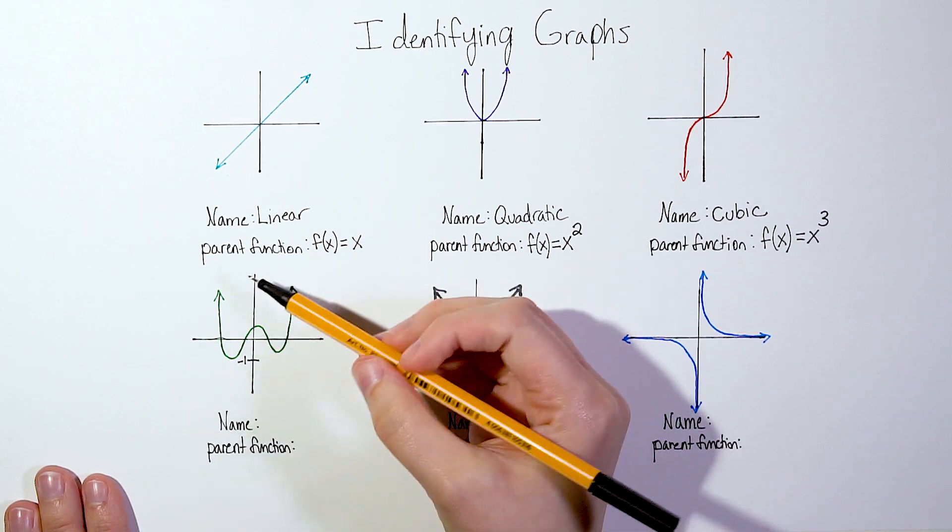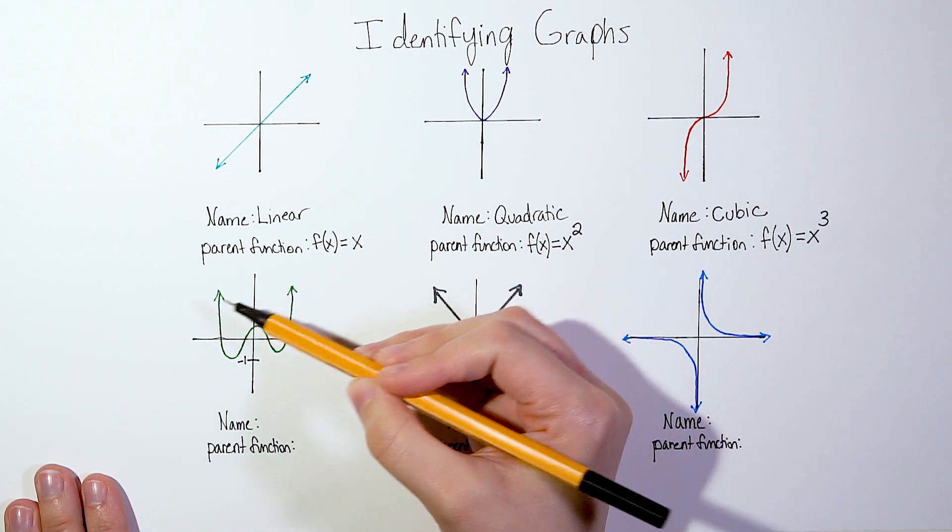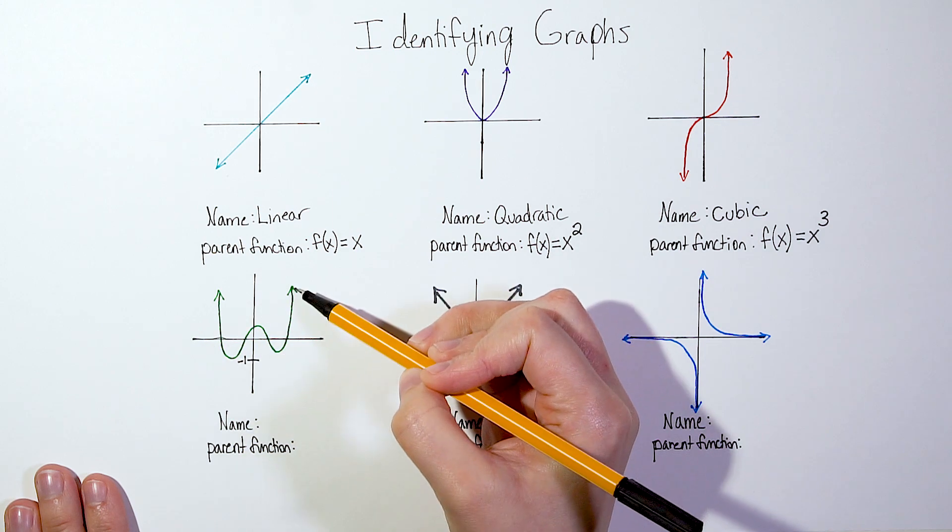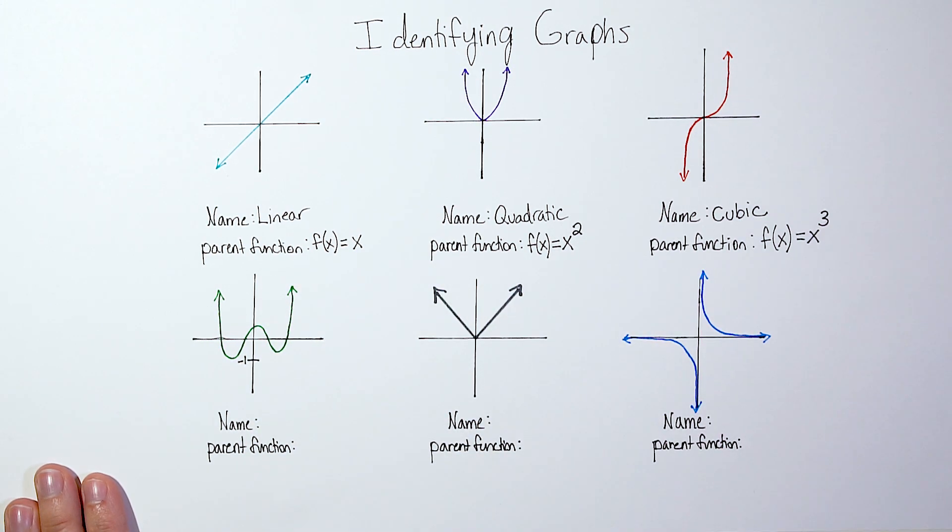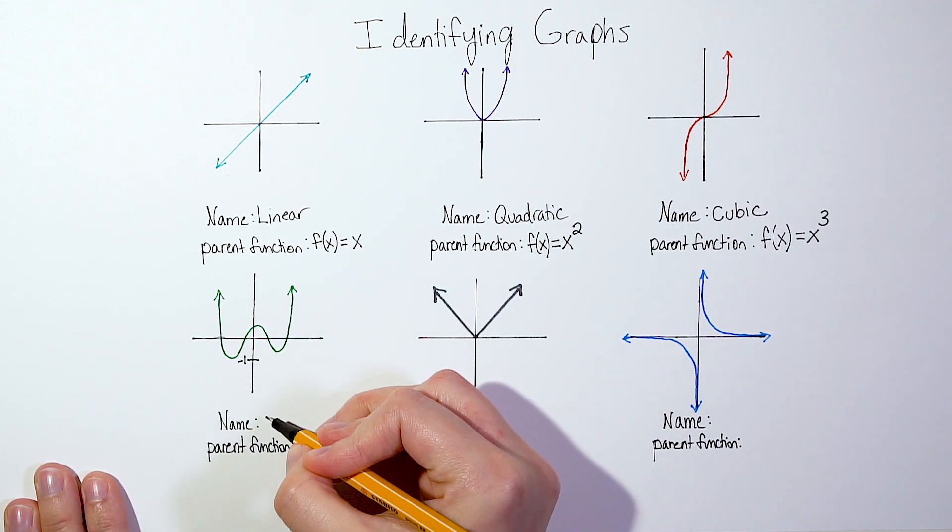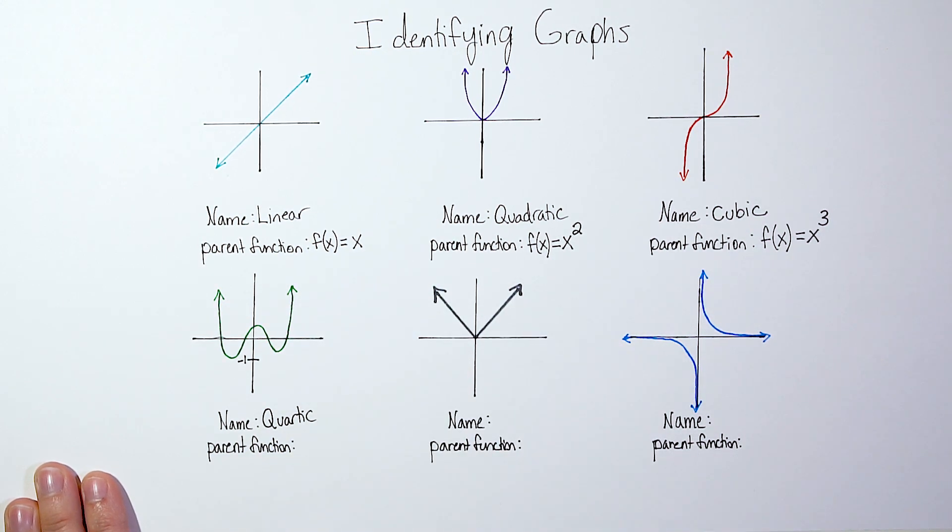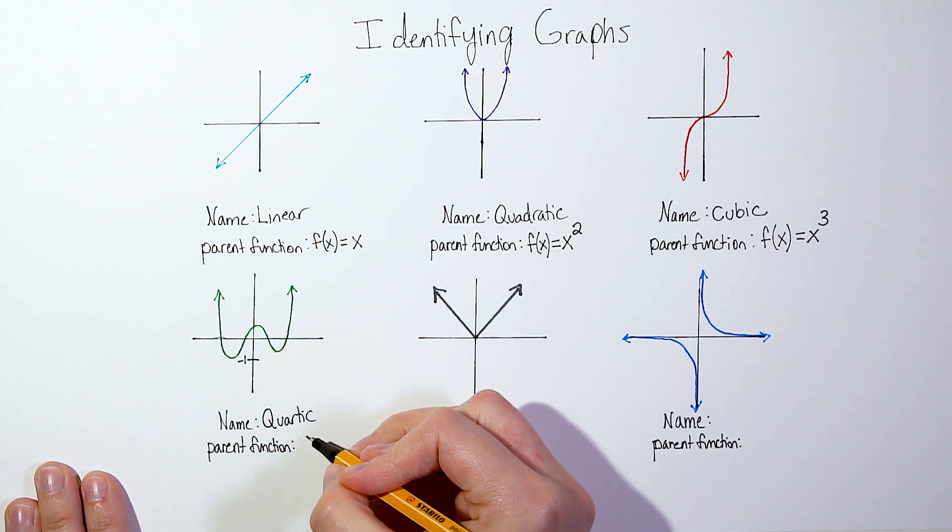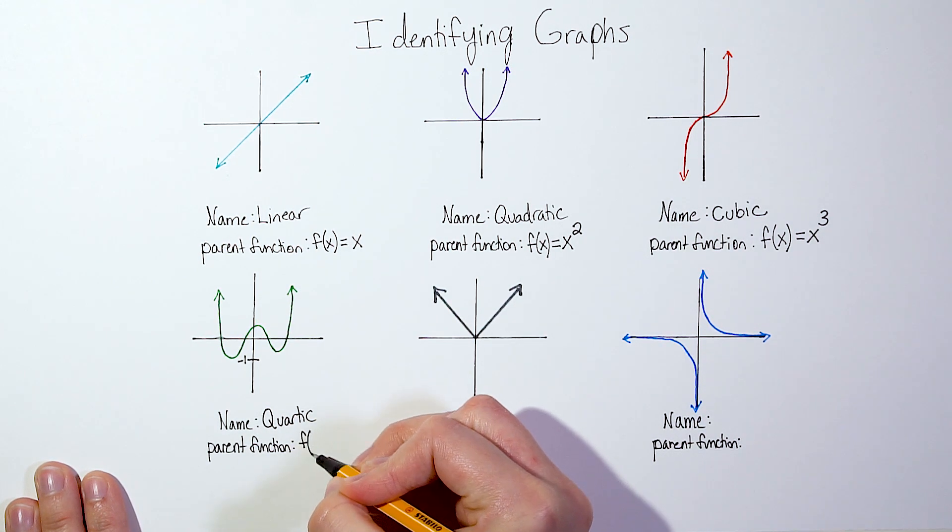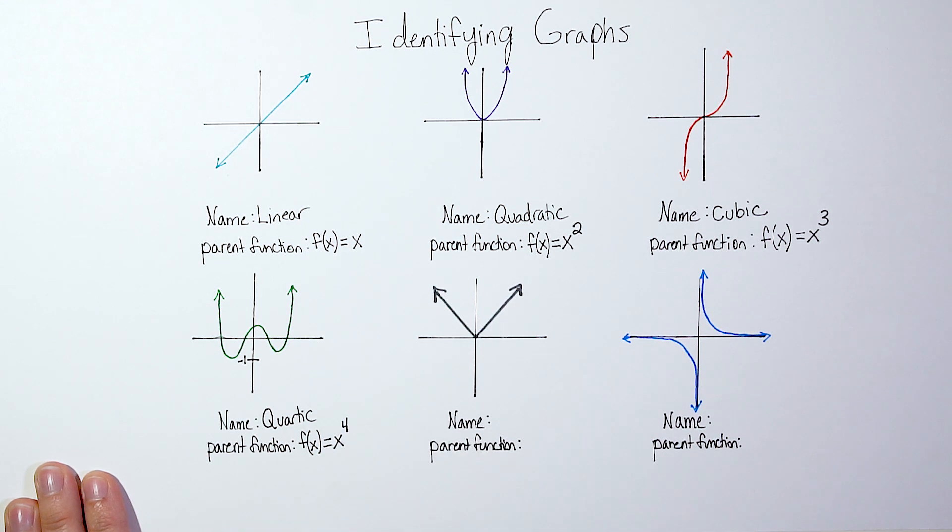Our next graph is pretty easy to identify because it looks like a W. Do you see that W shape with our green line? And anytime you spot a W shape, you know that this is called a quartic function. And the parent function of a quartic is f(x) = x to the fourth power.